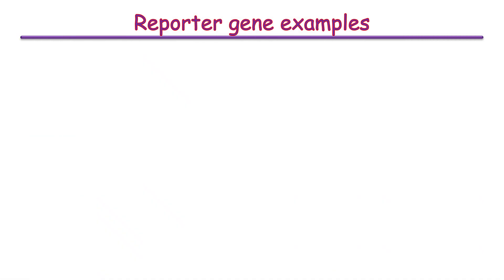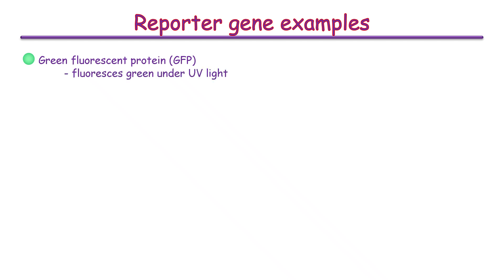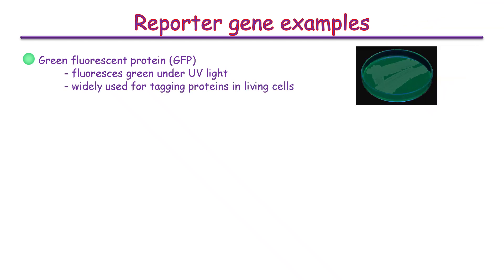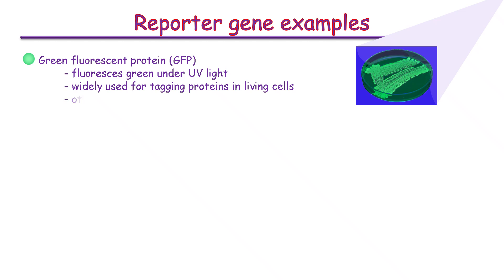Here are some of the most commonly used reporter genes. Green fluorescent protein, or GFP, fluoresces green when exposed to UV light. It is widely used for tagging proteins in living cells, and has also been engineered to act as a dynamic sensor of various signals. GFP-based sensors can report on a wide range of biological processes in living cells, such as ion concentrations, pH, protein interactions, and enzyme activities. Reporter genes are also available for other fluorescent proteins that emit light at different wavelengths — for example, red fluorescent protein and mCherry.